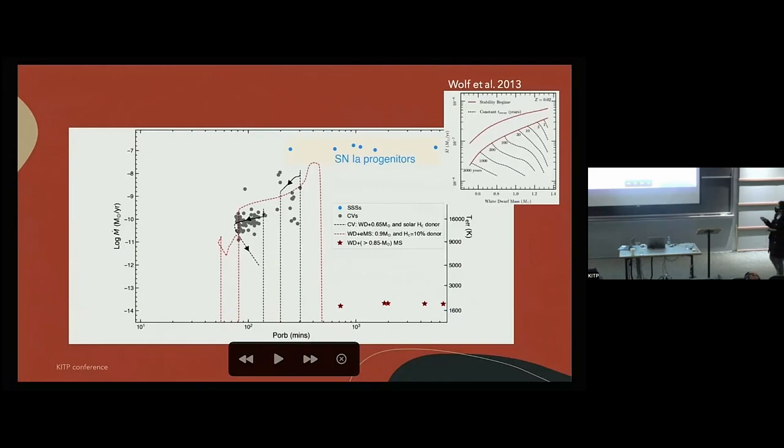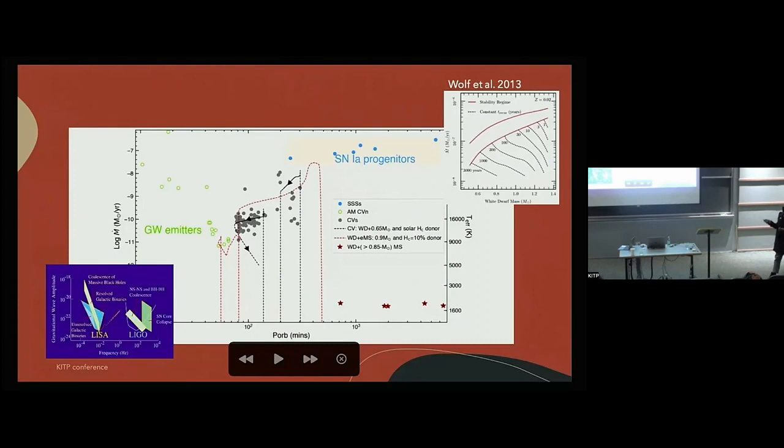One of them is the supernova Type Ia progenitor through the single degenerate channel. If the white dwarf is accreting at a large rate, a lot of hydrogen can be burned quasi-steadily on the white dwarf surface. On the other end we have the AM CVn stars, and these systems are very interesting because they can be used as calibrators for the Laser Interferometer Space Antenna mission.